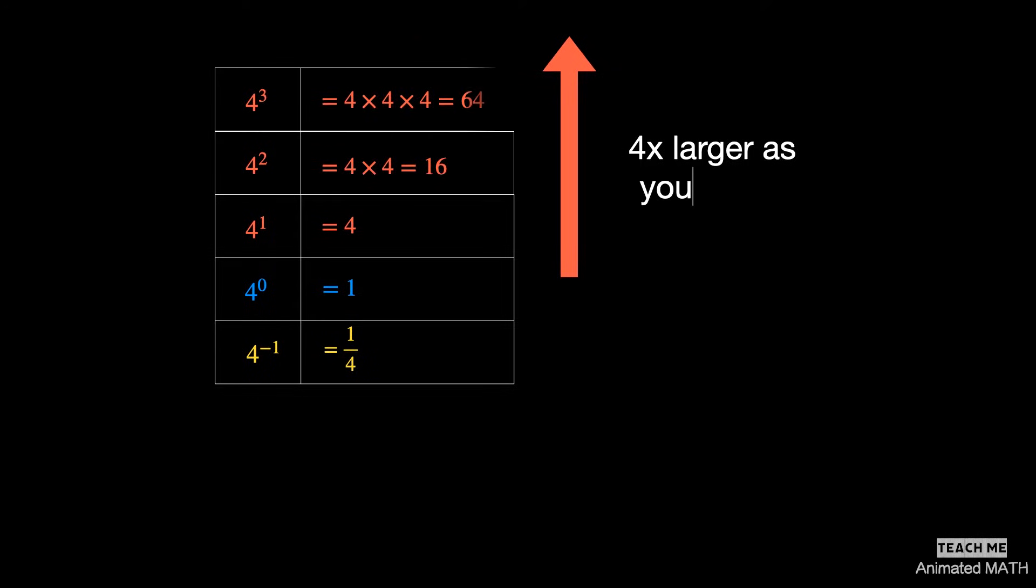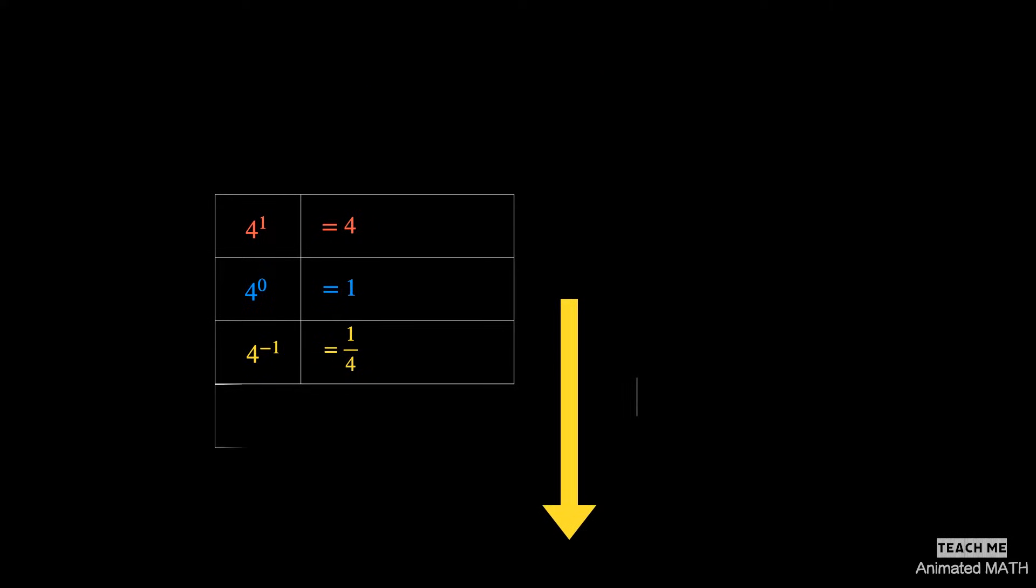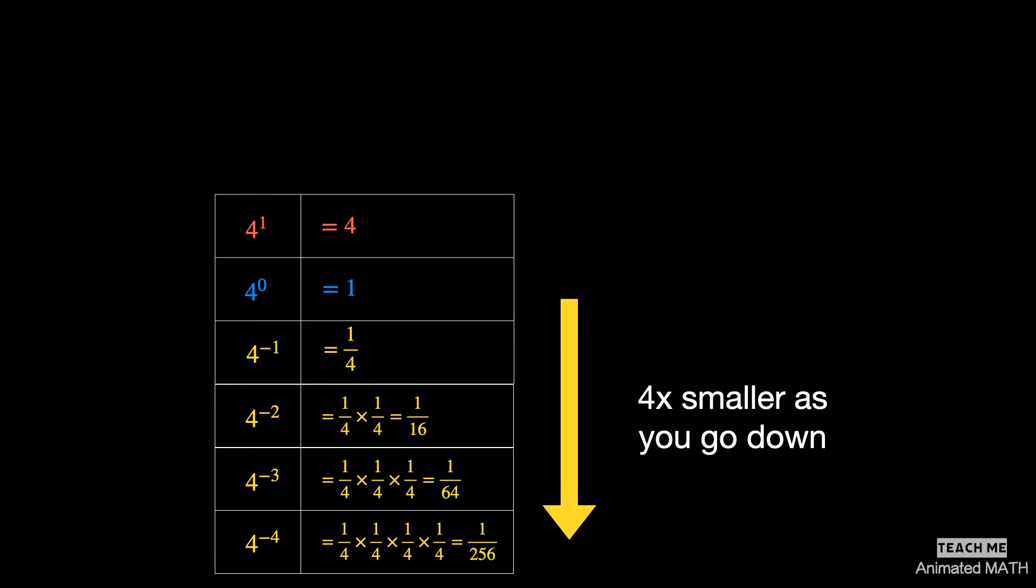As you move up, each number is 4 times larger than the previous one. And as you move down, each number is 4 times smaller.